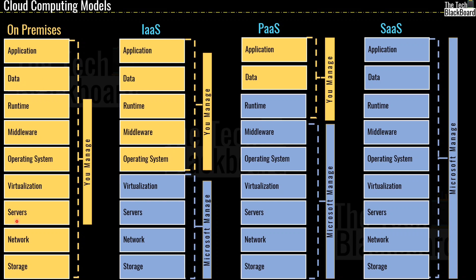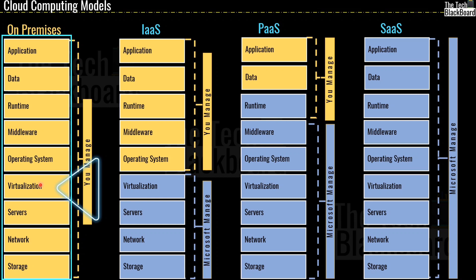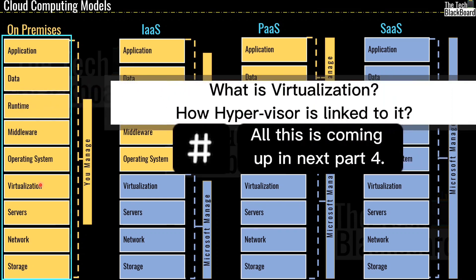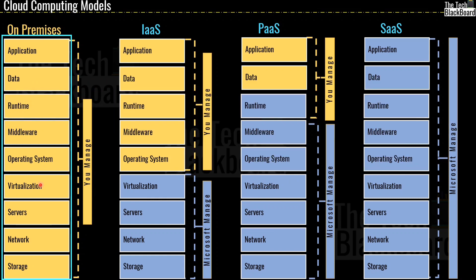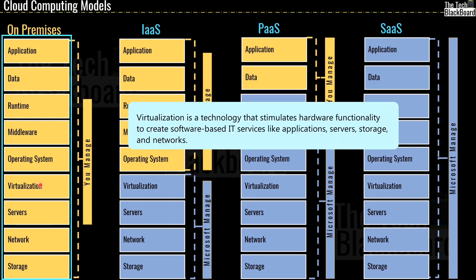Coming to this example on the very left, you can see major layers with different components used to build any data center. At the very bottom of this layer, you can see that we have storage, network, and servers. As we move up in the list, we start to shift our focus from hardware layers to the software ones. The next important layer is virtualization. Virtualization is a technology that simulates hardware functionality to create software-based IT services like applications, servers, storage, and networks.